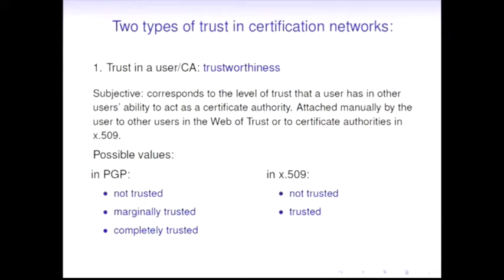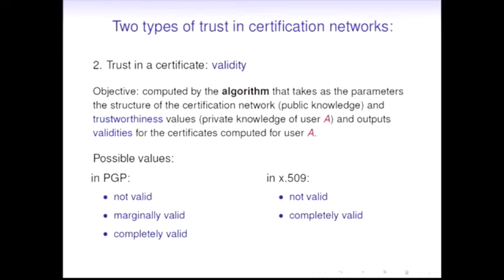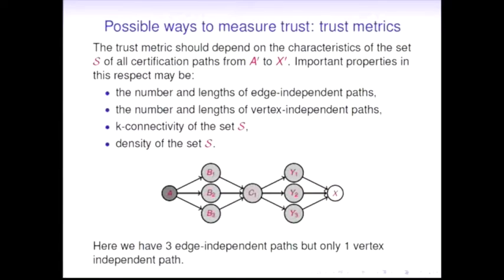We're talking about trust metrics. Trust arises here in two forms. First, it's the trustworthiness that the user has in a CA certificate authority or any other user. For instance, in X.509 standard, it's a binary choice: trusted or not trusted. In PGP there are three choices. The actual goal of the system is validity - the level of confidence the user has in a particular certificate, which is the result of an algorithm that takes as parameters the certification network structure, the root user for whom it is computing the validity, and their private trust values around all the other users in the network. This is what we call trust metrics.